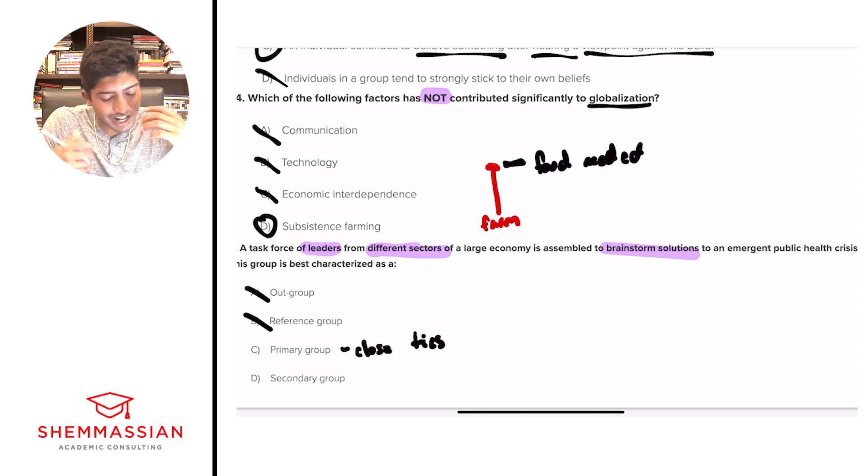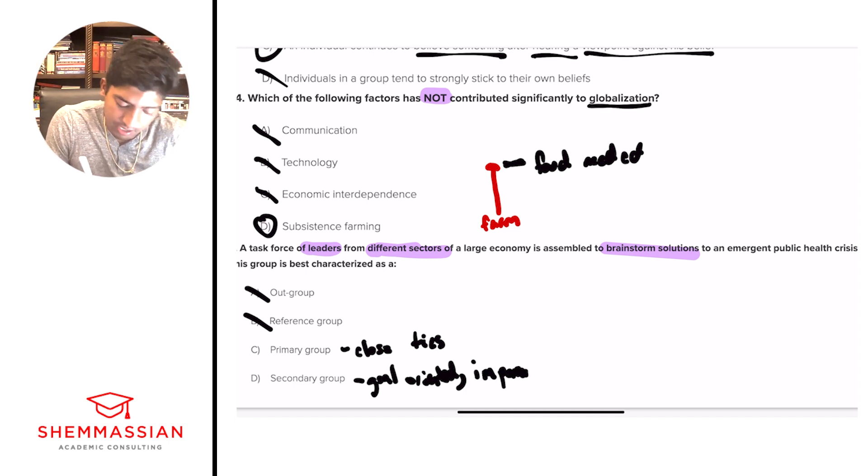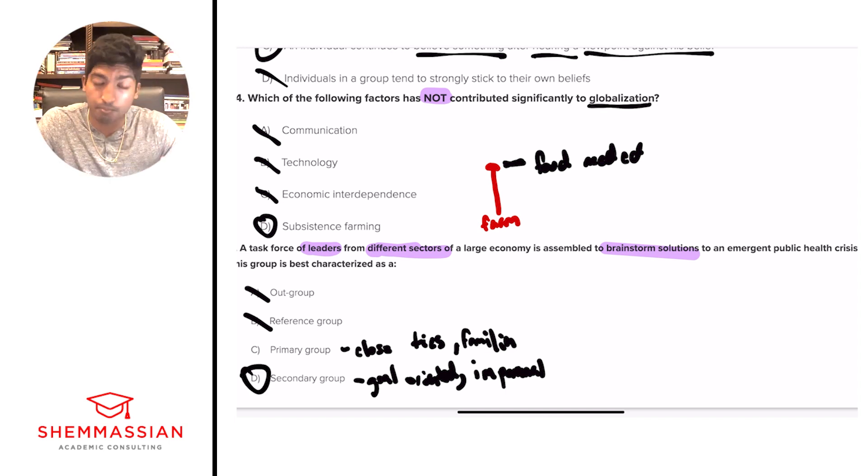If we're describing this, we're talking about leaders from different sectors. Are they going to have super familial close ties, or are they going to be more goal-oriented, impersonal just for the sake of solving a problem? Probably D, because we're solving a problem. In this case, it's brainstorming solutions. So we can eliminate C and we're five for five. We crushed it. Great work, team.